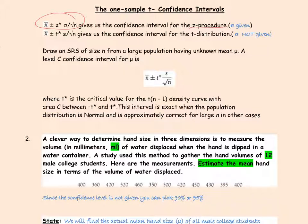Now in chapter 17, sigma is not given in all the problems. So instead of sigma, we're going to use s, which is the standard deviation from the sample. Remember that sigma was the standard deviation of the population. So we're going to use s instead of sigma, and that means we're really looking at the t-distribution.